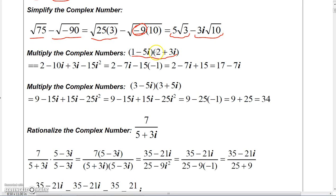FOIL just means I take the first number times the first number in each binomial, so 1 times 2 would be the first times the first. And then the O is the outer product, so I multiply 1 times 3i and I get 3i.